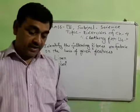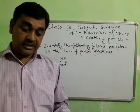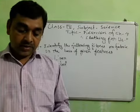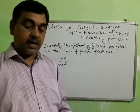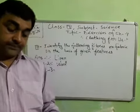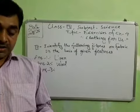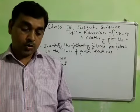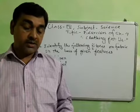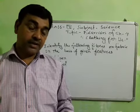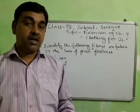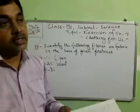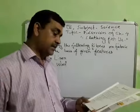Answer number three: this fiber is strong, durable, and stretchable. It is used to make umbrellas, windcheaters, and raincoats. This type of cloth is made from synthetic fiber, which is made in factories. Because these fibers are very strong, durable, wrinkle-free, and their color does not fade after several washes. So write down the correct answer: synthetic fiber.